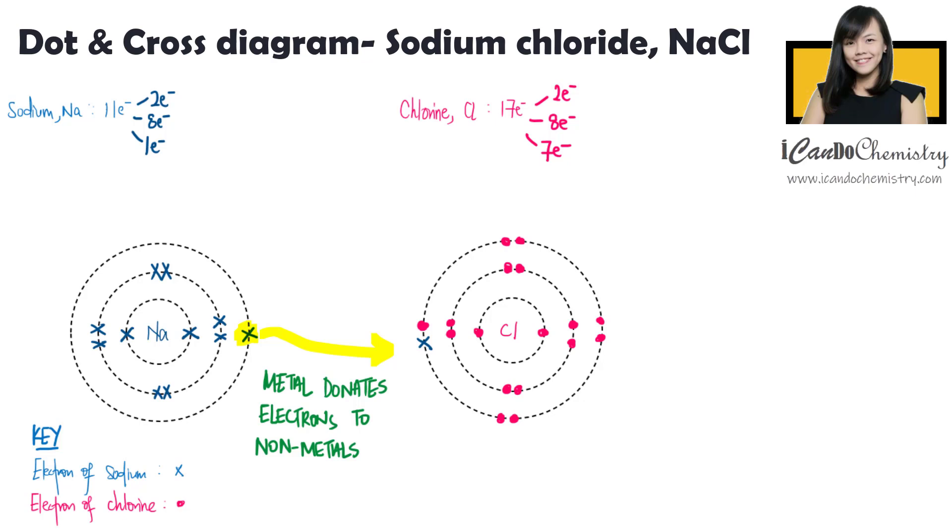Now let's work out the charges of the ions. Sodium atom has 11 protons which gives it a charge of positive 11. Hence, the overall charge of this atom is 0. Now when sodium gives away its electrons to the non-metal, the number of protons remain unchanged. Hence, the positive charge is still positive 11.